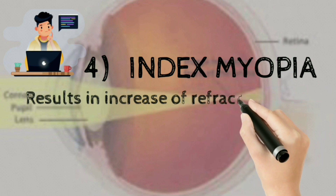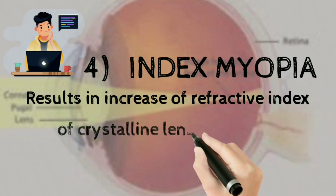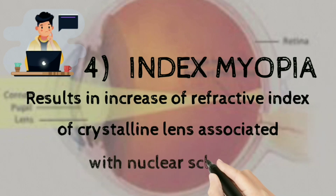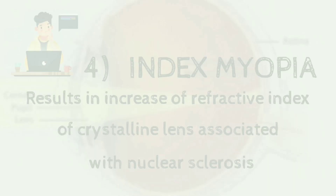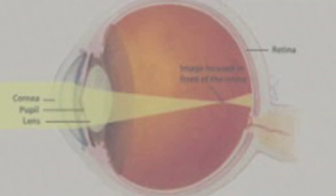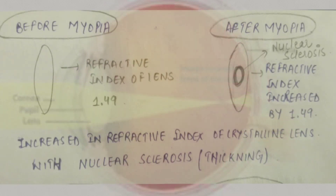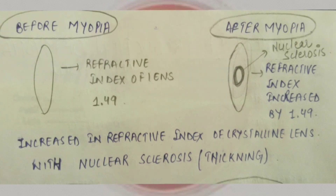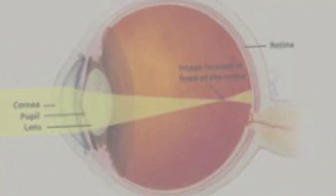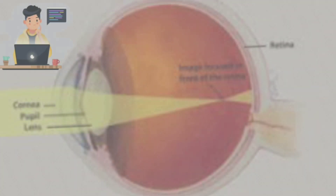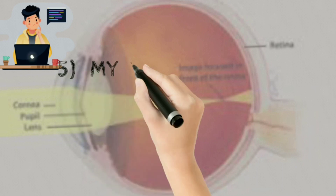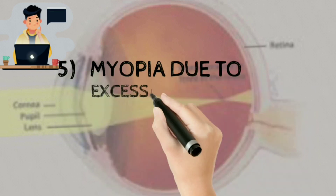Index myopia results from an increase in the refractive index of the crystalline lens, associated with nuclear sclerosis. There is no such association in the normal eye, but after a patient develops myopia, there is an association with nuclear sclerosis. The refractive index of the normal eye is 1.49, which is increased after the onset of myopia.